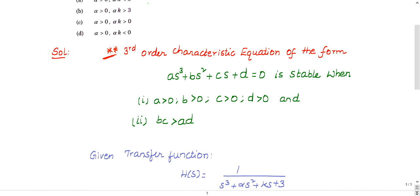Any third-order characteristic equation is of the form as³ + bs² + cs + d = 0. This third-order characteristic equation is stable only when all coefficients must be positive.